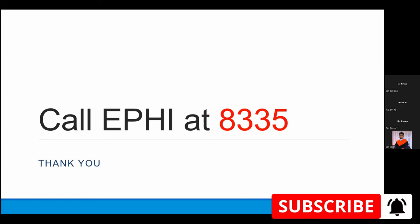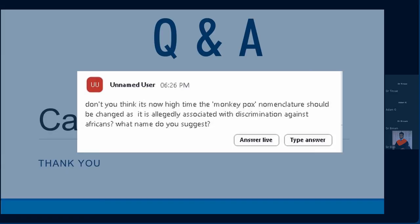The first question is: what name do you suggest to prevent discrimination against Africans? The WHO is considering changing the name, but I don't have specific suggestions. In my opinion, the name doesn't matter as long as we know the syndrome and how to prevent it — because discrimination, whether overt or hidden, is a global phenomenon and cannot be addressed by a simple name change.